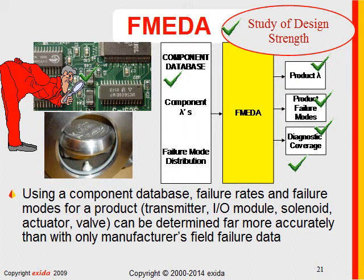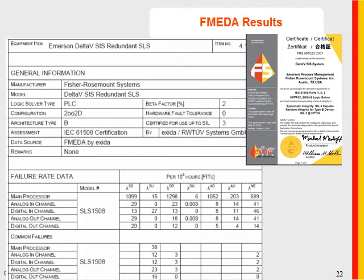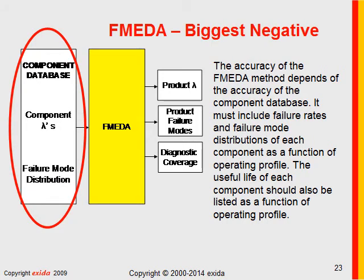Using a good component database, these numbers can be determined and predicted far more accurately than with only manufacturers' field data on previous products. FMEDA can generate very detailed results that clearly distinguish between different designs of mechanical, electronic, and electromechanical devices. The biggest negative of an FMEDA is the component database — garbage in, garbage out. The accuracy of the FMEDA depends on the accuracy of the component database, so it's very important that any component database be verified, or what we might call calibrated.